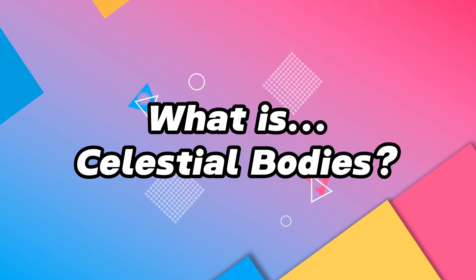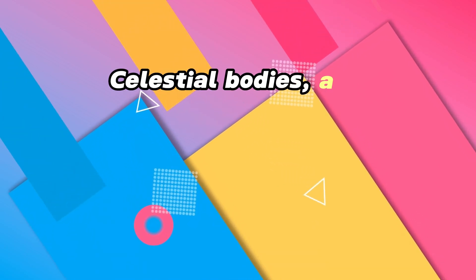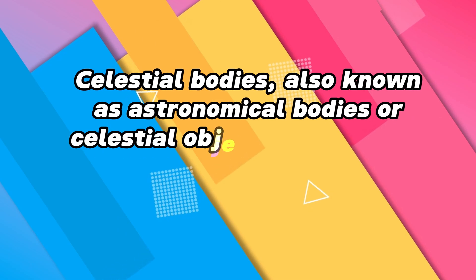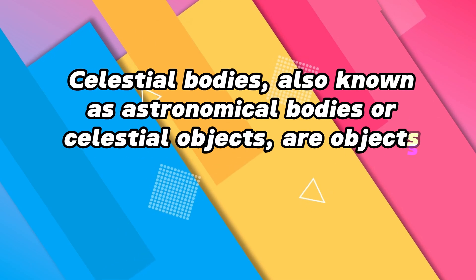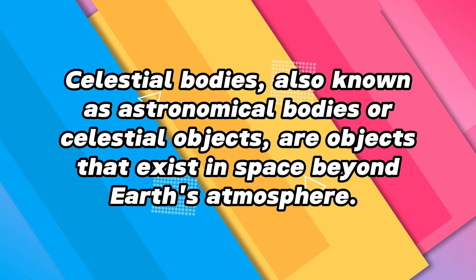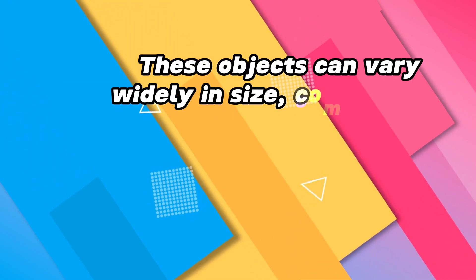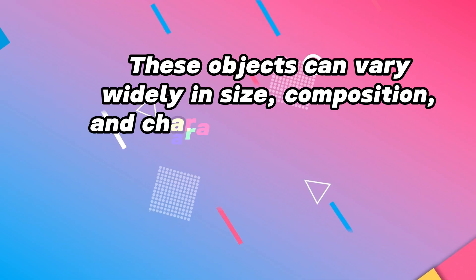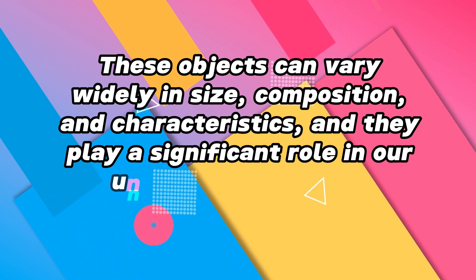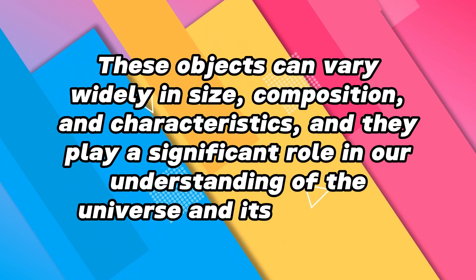What is celestial bodies? Celestial bodies, also known as astronomical bodies or celestial objects, are objects that exist in space beyond Earth's atmosphere. These objects can vary widely in size, composition, and characteristics, and they play a significant role in our understanding of the universe and its workings.